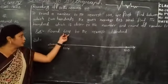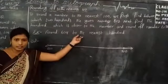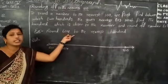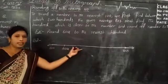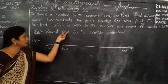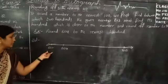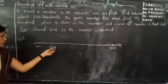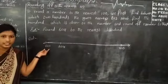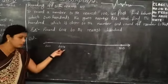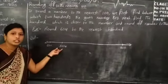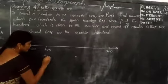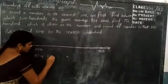Round 604 to the nearest 100. This is the number line. So 604 lies between 600 and 700. 604 is closer to 600, so this number rounds to 600.